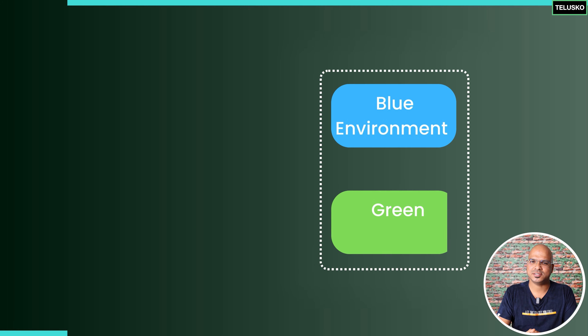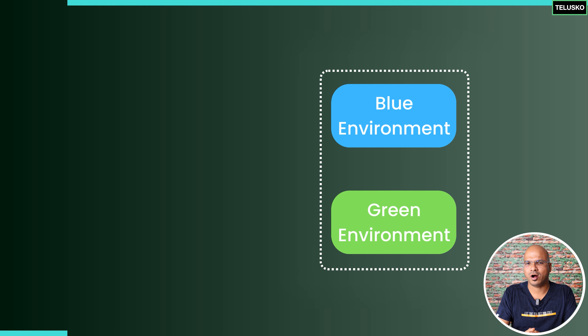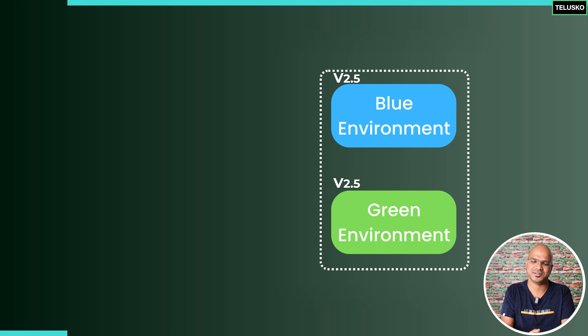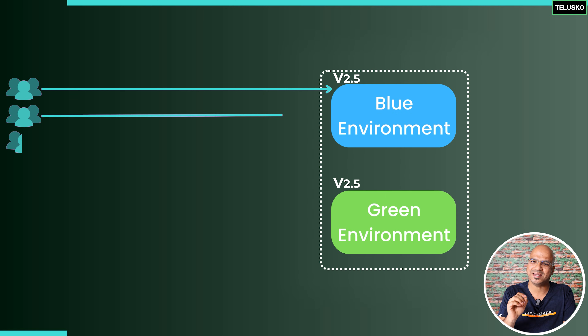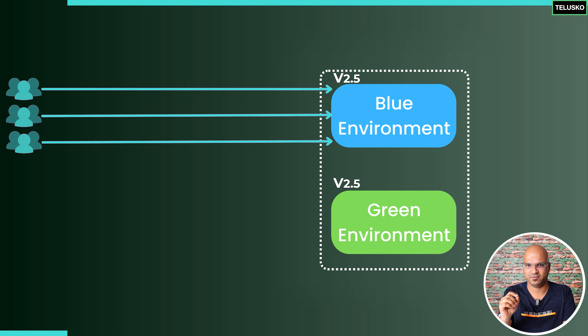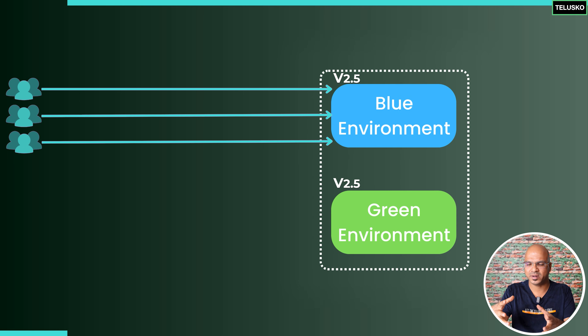What's important is the concept: you will have two running instances at the same time. In these two instances, one is called the blue server and the other the green server — or blue instance and green instance. At any one point, only one instance is live for the public, even though both are running.